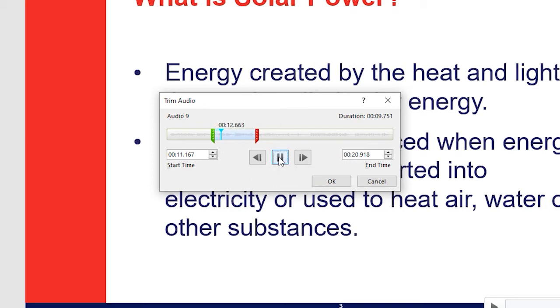What is solar power? Let's explore this. Energy created by the heat and light of the sun is called solar energy. So that's all good. The first bullet point is fine. So obviously, the bit there is what we really wanted to remove, and we are also going to leave out the second bullet point, which is in this sort of area.